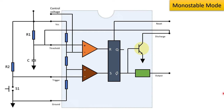A monostable multivibrator can be used in delay circuits, timing circuits, temporary memory, square wave generation, and many more applications. Here is the circuit for a monostable multivibrator where R1 and R2 resistors, capacitor C, and switch S1 are connected in this manner.